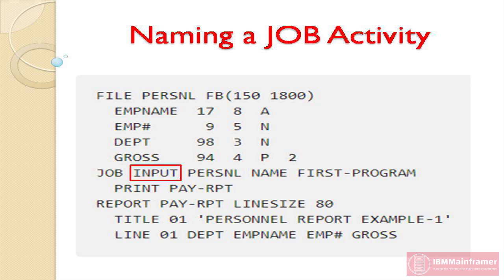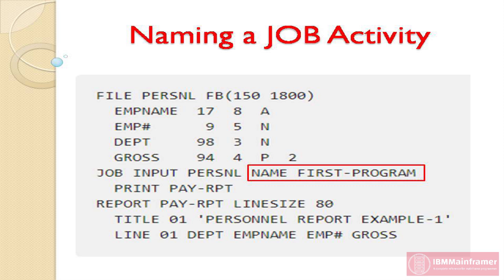The next parameter after input in our sample program is name. This tells the program that a job name follows. A job activity is typically named for documentation purposes only. It helps to give job activities a descriptive name, especially when you have more than one activity in your program. In our example, we named the job activity 'first program' by typing the parameter name, followed by the name 'first program' of our choice.